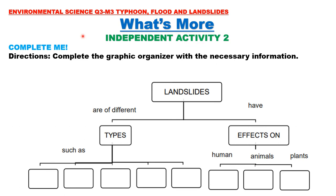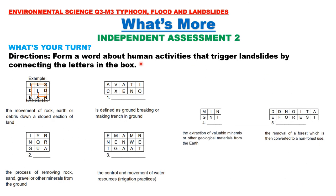Independent Activity Two: 'Complete Me' — Complete the graphic organizer with the necessary information about landslides: the different types and the effects on humans, animals, and plants. Independent Assessment Two: Form a word about human activities that trigger landslides by connecting the letters in the box. For example, the movement of rock, earth, or debris down a sloped section of land — the answer is 'landslide.'